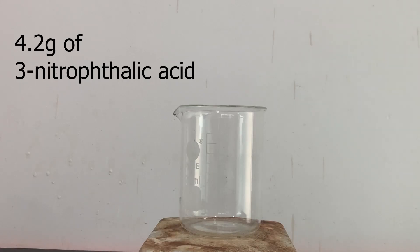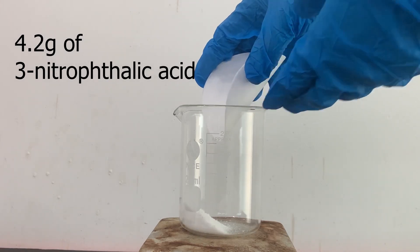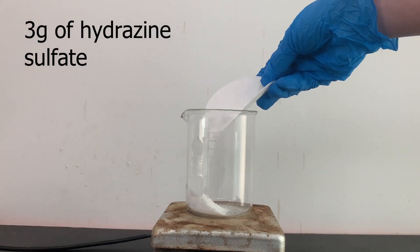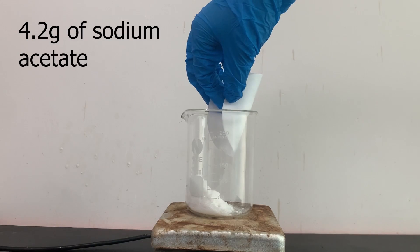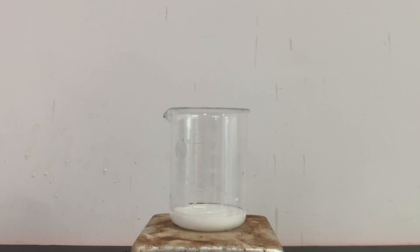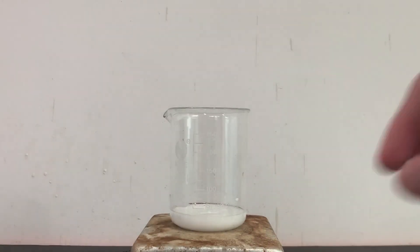Into a beaker, I added in 4.2 grams of 3-nitrophthalic acid. I then added in 3 grams of hydrazine sulfate and 4.2 grams of sodium acetate. I dropped in a stir bar and added 20 milliliters of water. The mixture is heated until everything dissolves to form a solution.